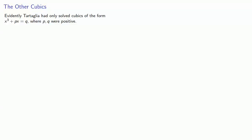Evidently, Tartaglia had only solved cubics of the form x³ + px = q, where p and q were positive. This is a type known as the cube and cossa. Remember, cossa is Italian for 'thing,' so we could view this as the cube and some unknowns.